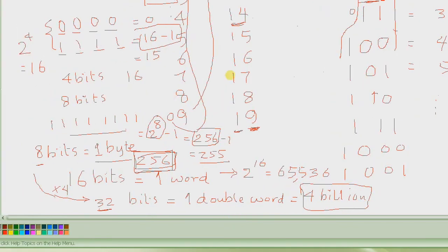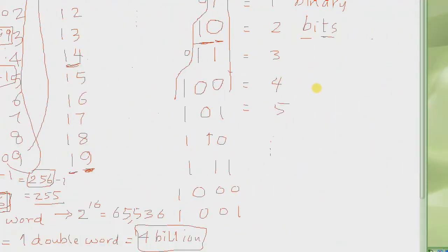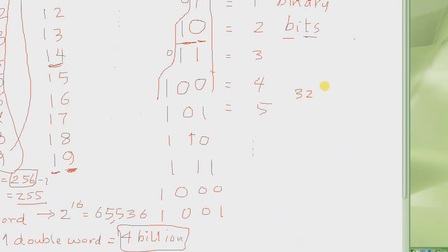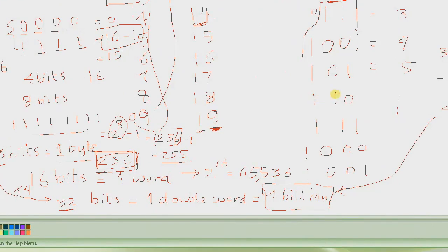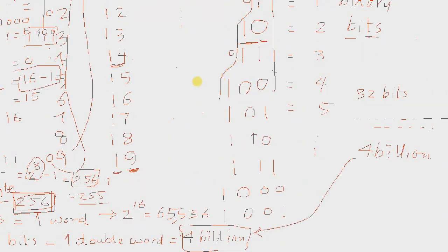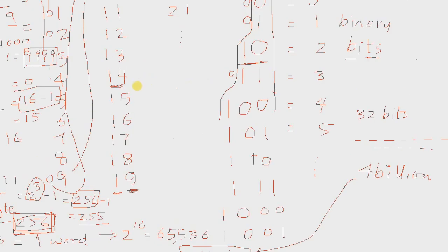So this is the introduction — enough introduction to binary number system to allow us to define what variables are, the type of variables, and how they are represented in computers in subsequent lectures. If I have a memory location in the computer with 32 bits of space, and you ask how many total numbers can be written there using the binary number system, the answer is 4 billion, because 32 bits equals 1 double word.